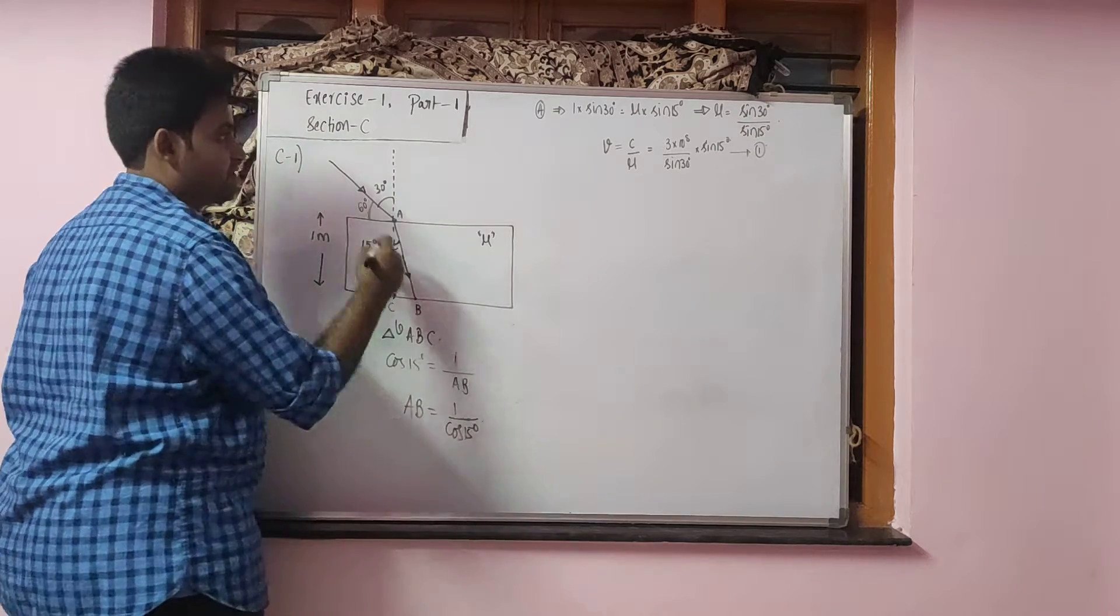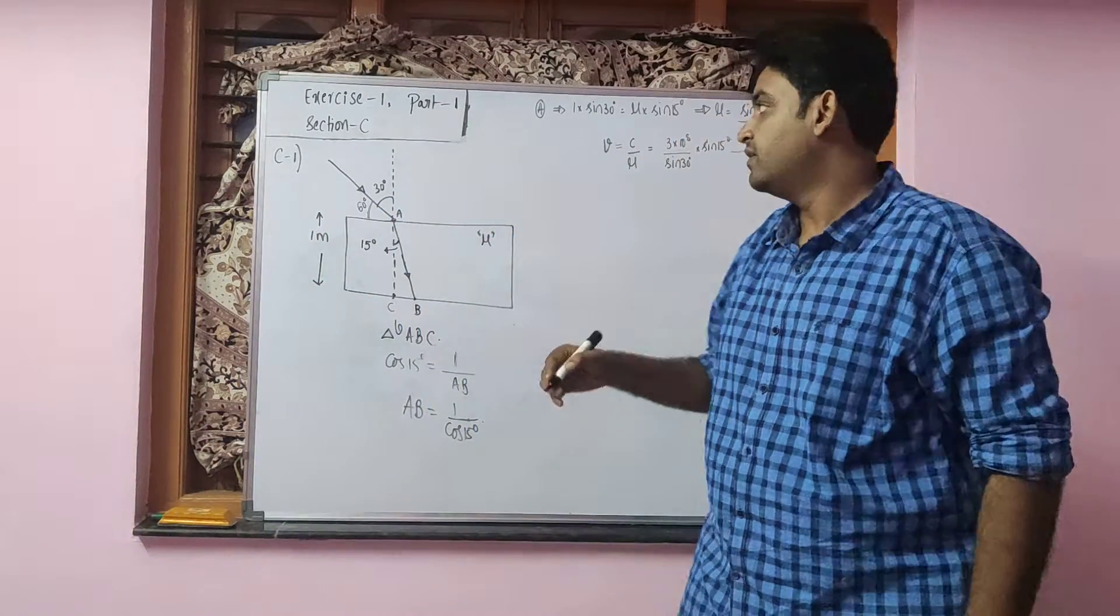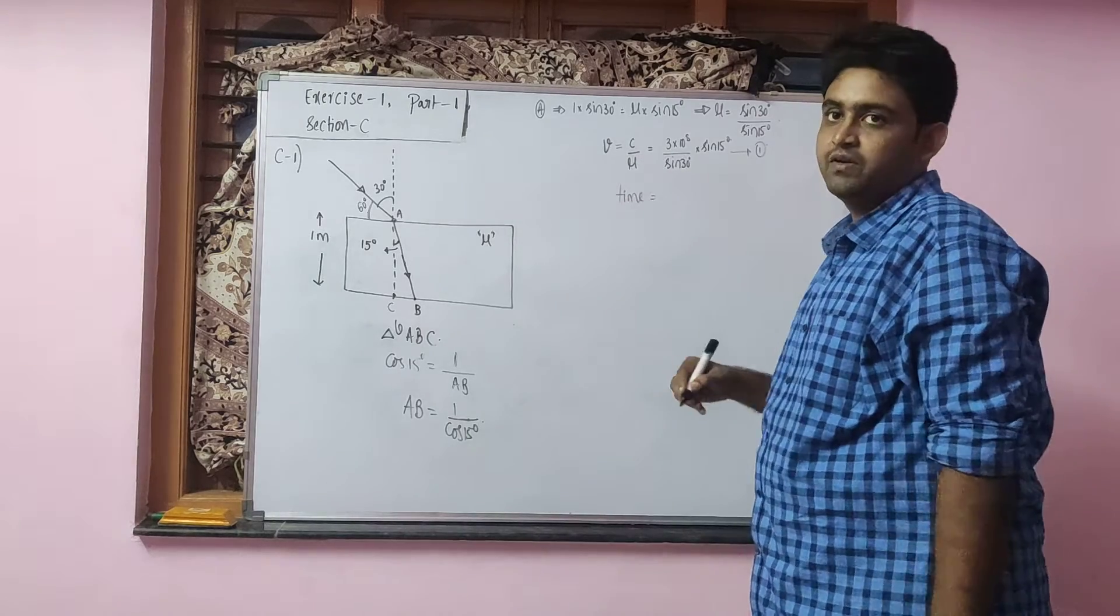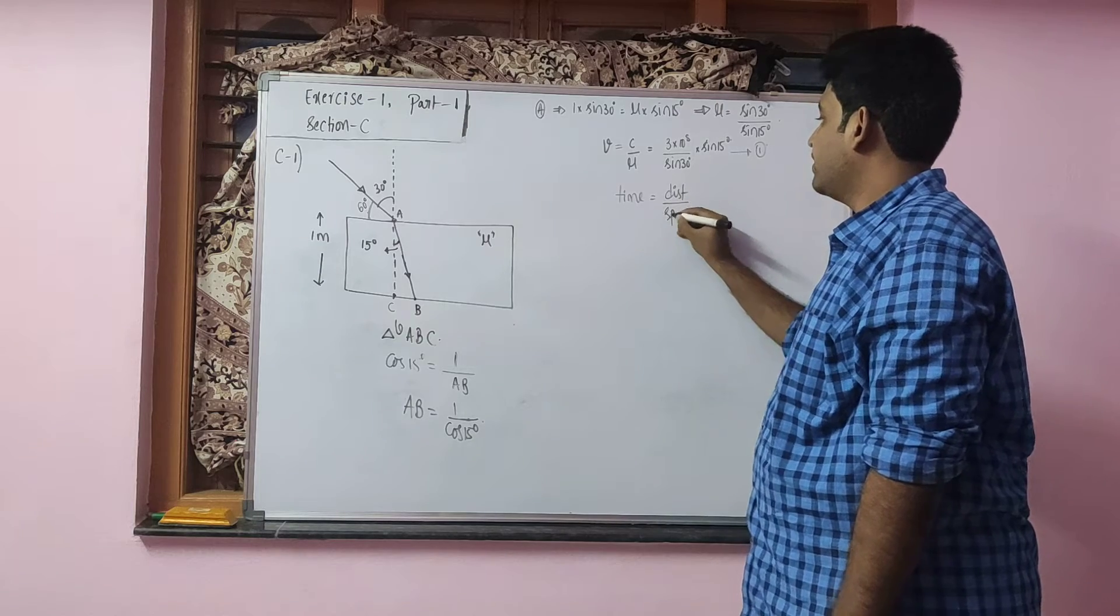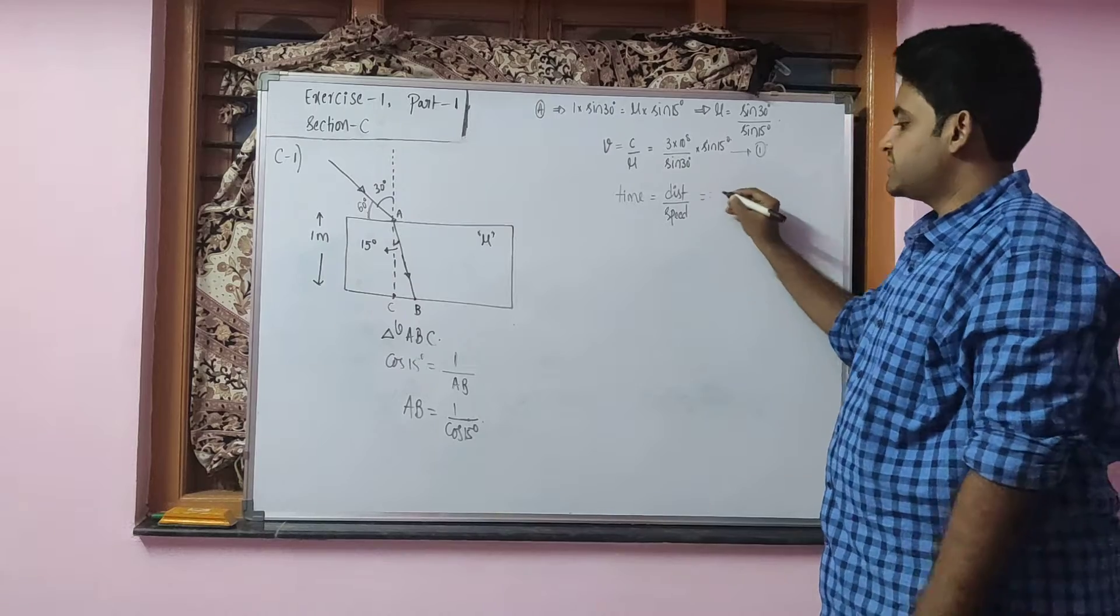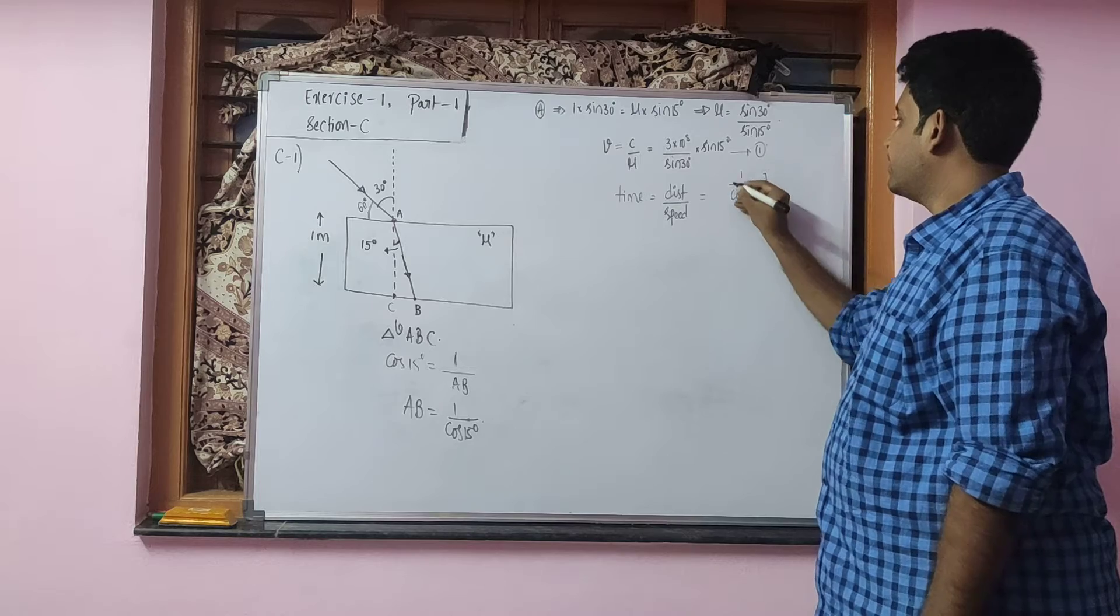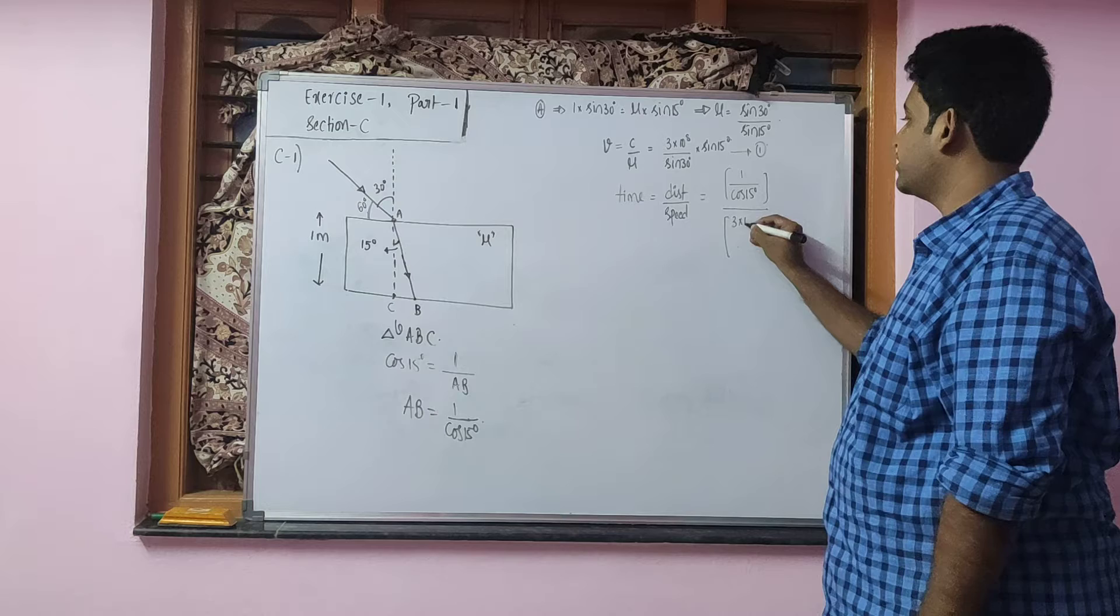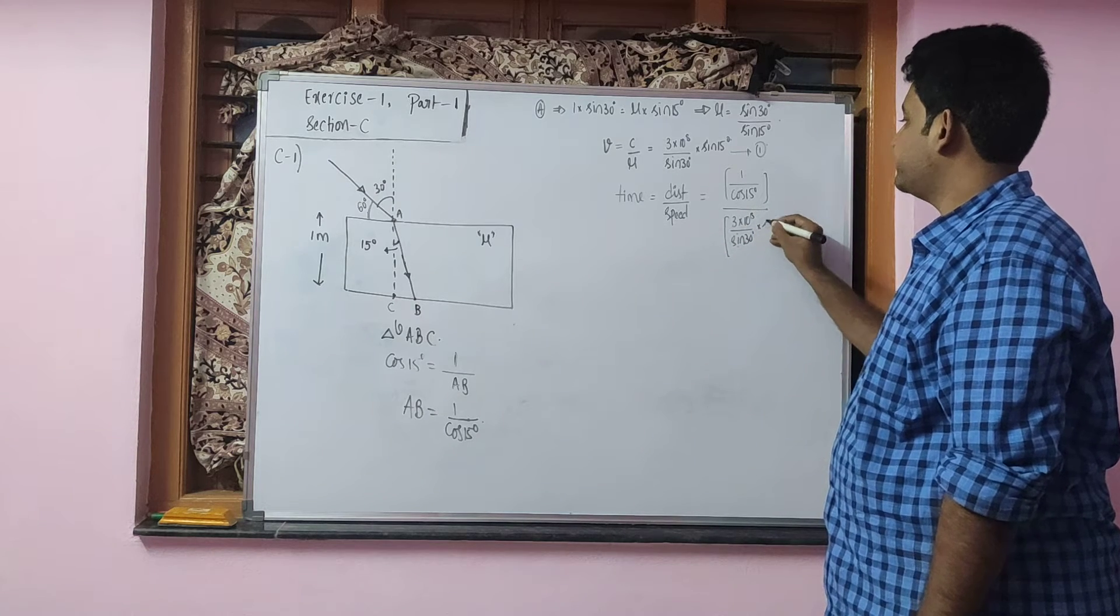Also we know that light will be travelling with uniform speed, constant speed. So I can say that the time taken for its journey inside the slab will be equals to distance divided by its speed as it is moving without any acceleration. The distance travelled is AB here which is 1 by cos 15 divided by the speed as we have written 3 into 10 power 8 divided by sine 30 into sine 15.